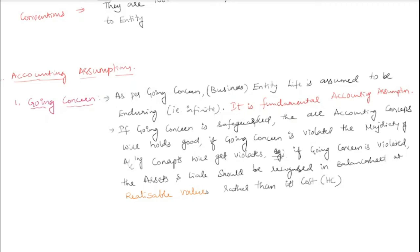Usually assets should appear in books at cost — even after depreciation, whatever the remaining written down value is, that will appear in the books. We call that historical cost. But suppose going concern is violated — meaning the business is going to close — then assets should not be shown at cost but at realizable values.